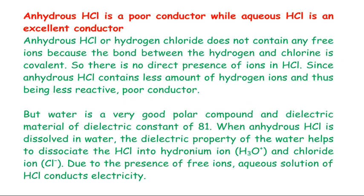Anhydrous HCl is a poor conductor while aqueous HCl is an excellent conductor. Anhydrous HCl contains a covalent bond with electron sharing and no ions, so it cannot conduct electricity. When dissolved in water — a good dielectric material with dielectric constant 81 — HCl is ionized and dissociates to form H3O⁺ cations and Cl⁻ anions, enabling electrical conduction.